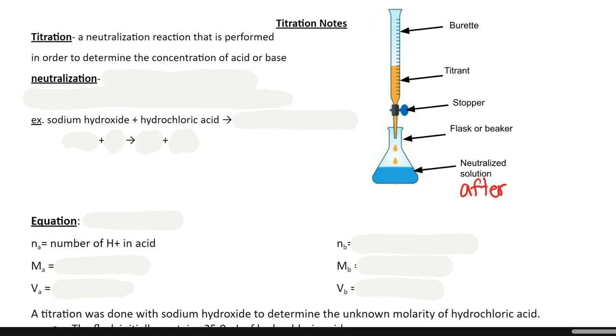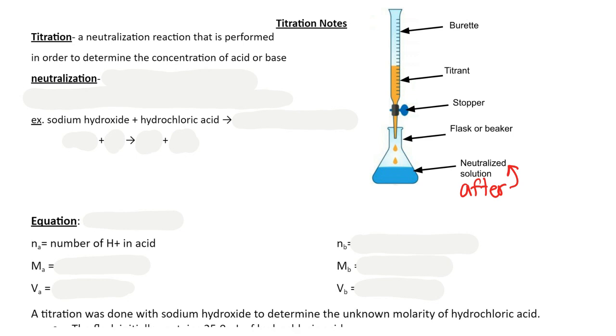I could also do the reverse. My titrant could be a base, I could put an acid into my flask, it would still end up neutralized afterwards. So it can be flipped upside down. Now let's talk about that neutralization piece.